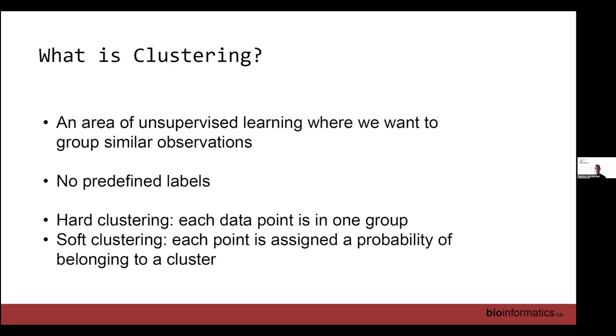For clustering there is no true proper number of clusters, so we just try our best and identify what works. There's no predefined labels. There are two main types of clustering: hard clustering where each data point is in one group, or soft clustering methods where you might be assigned a 30% chance you're group A, 70% chance you're group B.